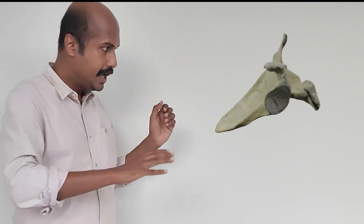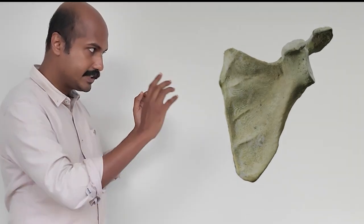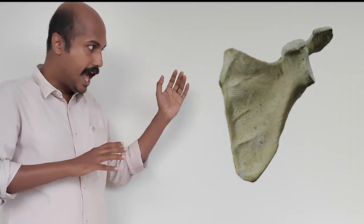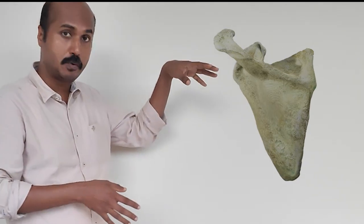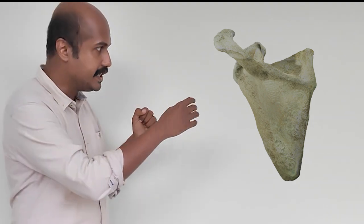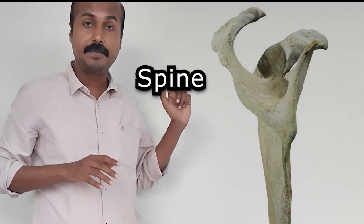You can see that one fossa is called the subscapular fossa, and on the posterior aspect, you can see if I turn this around, there is an infraspinous and a supraspinous fossa. That is separated by a shelf-like process and that process is called the spine of the scapula.